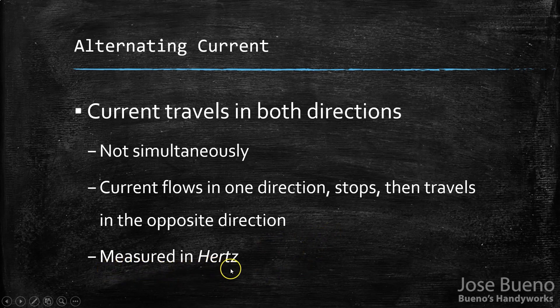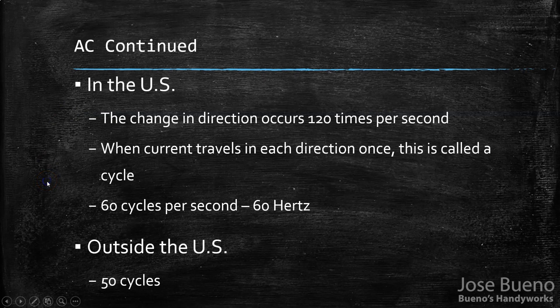This is measured in what's called Hertz. If you're familiar with electricity, you've probably heard that term before — Hertz and alternating current go hand in hand. In the US, the current changes directions about 120 times per second.